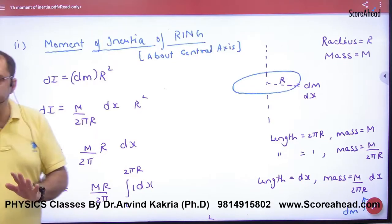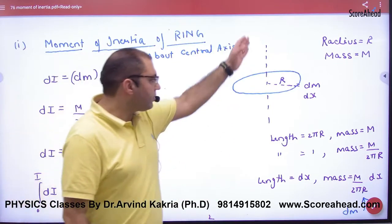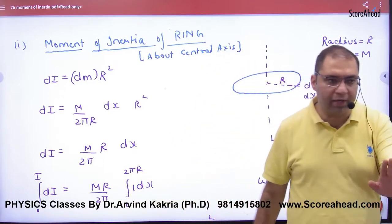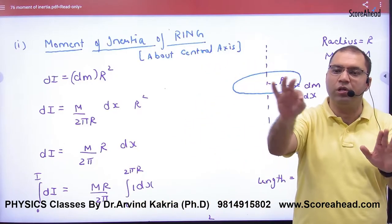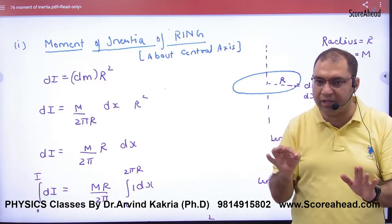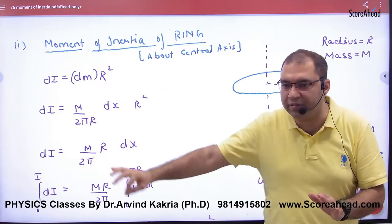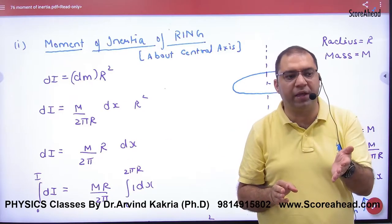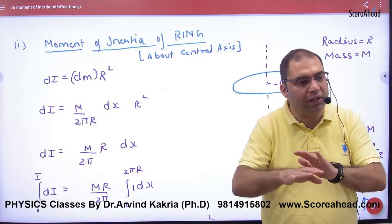Moment of inertia of a ring—where will the axis be? From the center. What is the rule? Start from small particles, and how is the mass distributed? How is it distributed in the ring? It's distributed over its length.